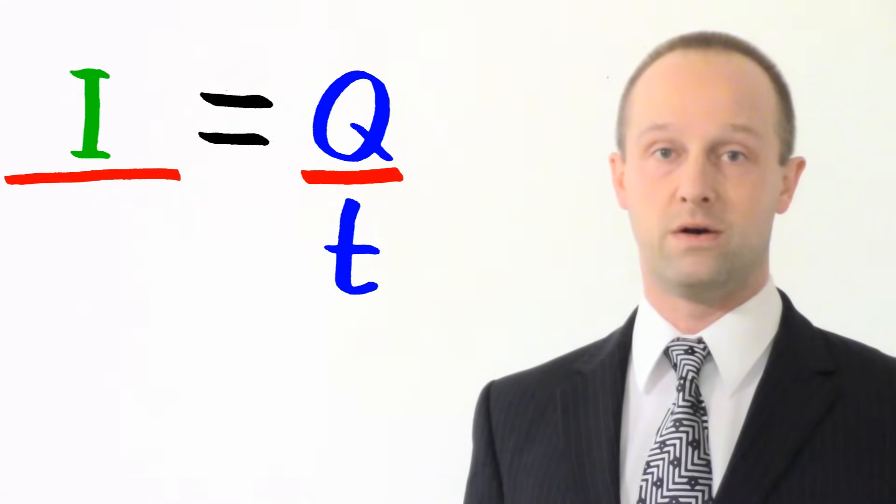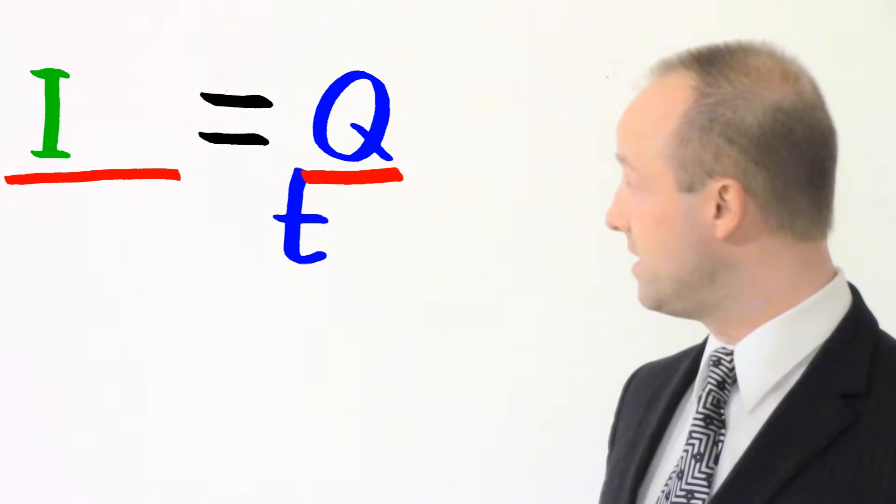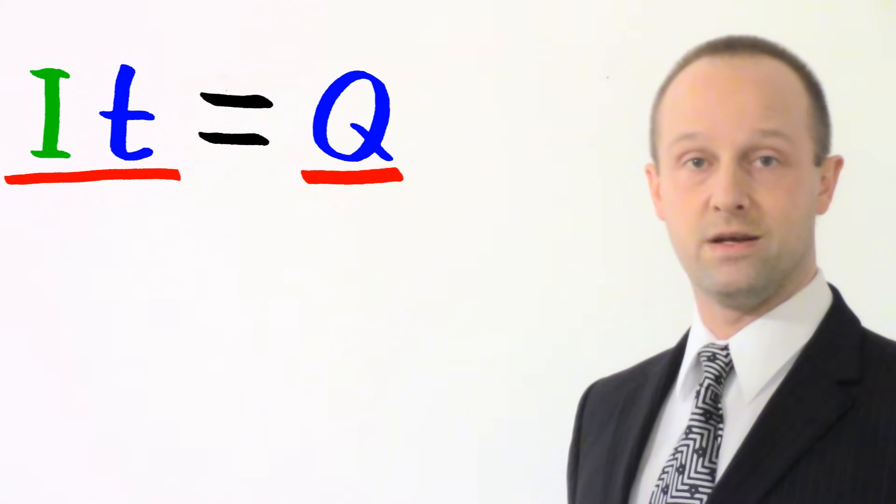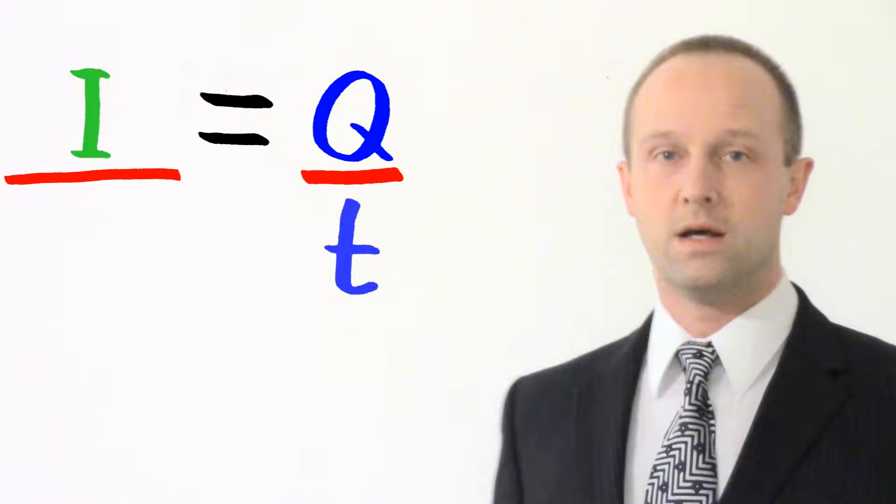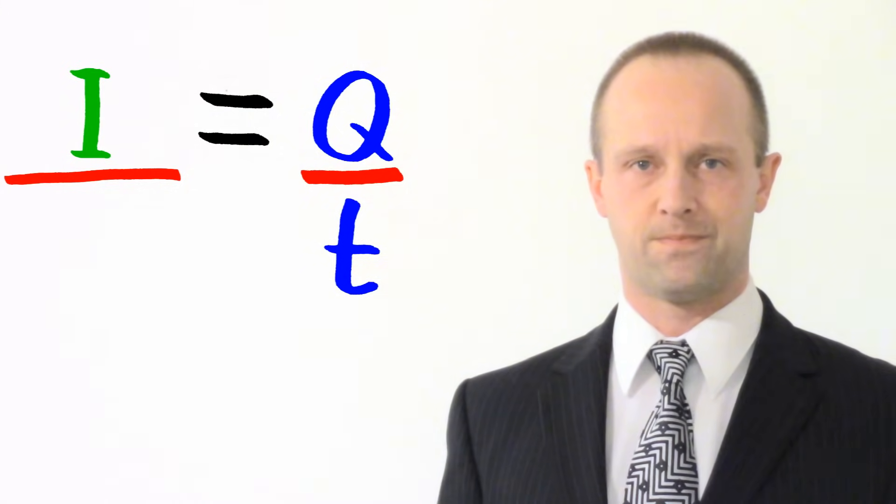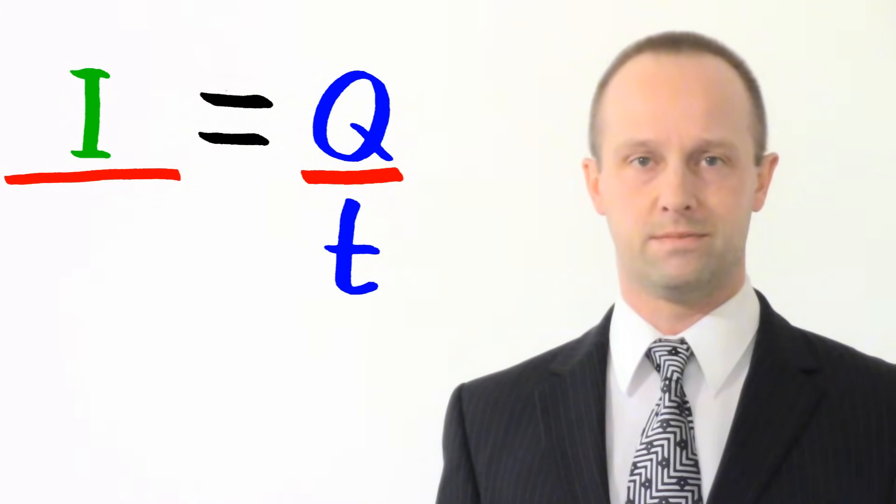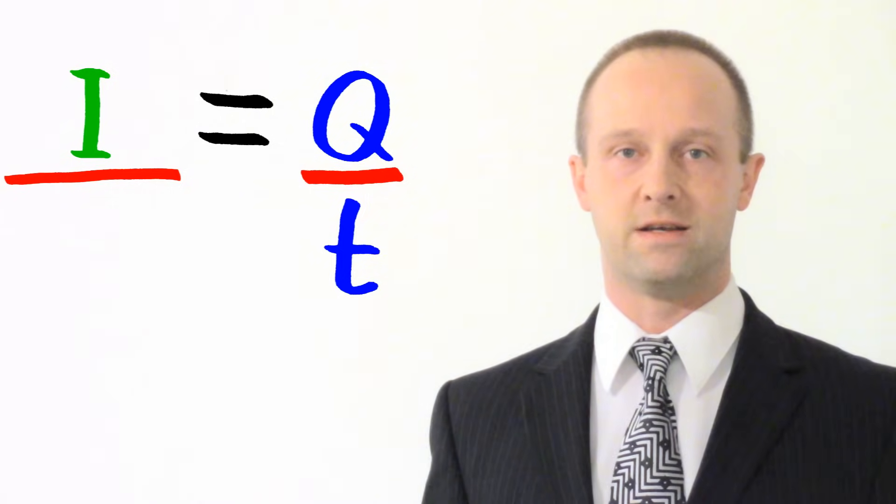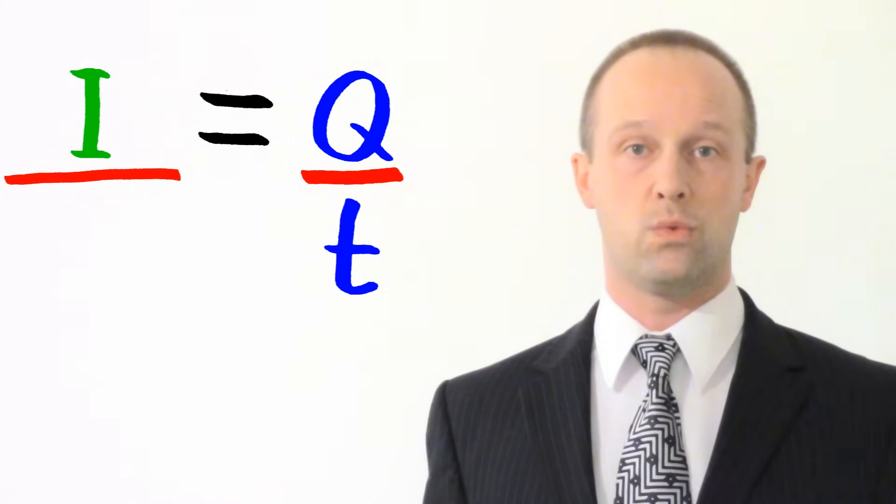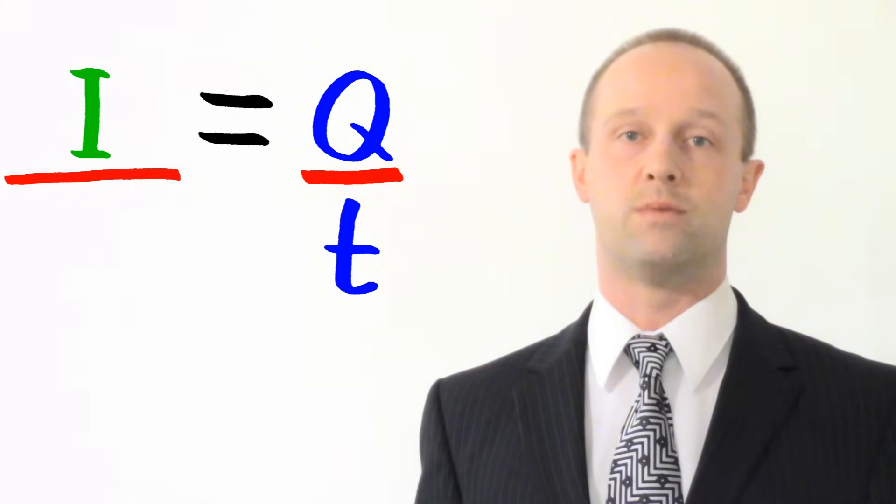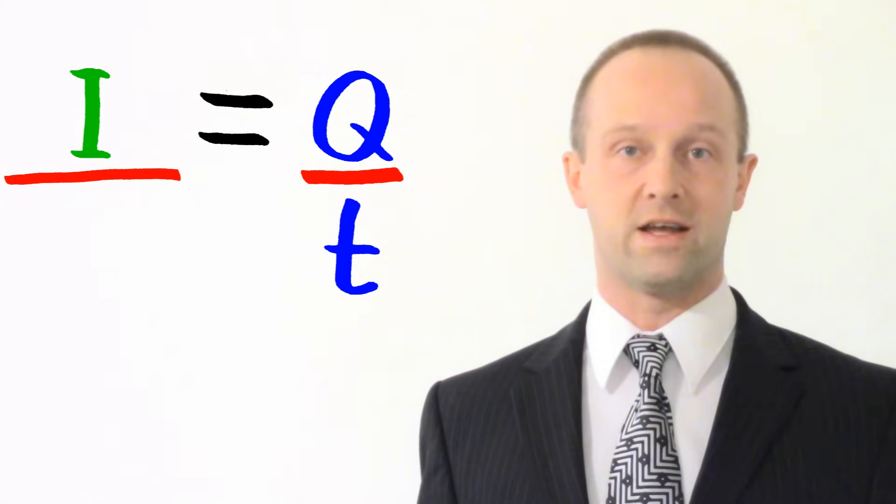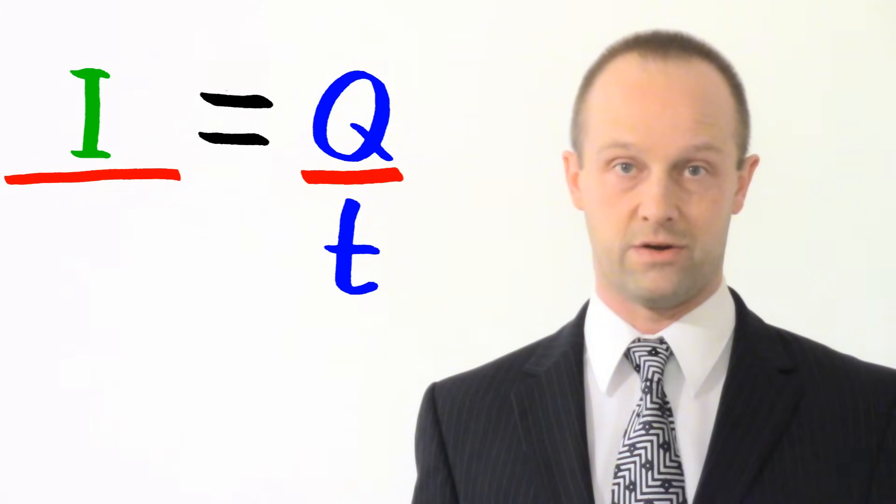Let's have a look at another example. I equals Q over T. Again, if I wanted to find Q, I would just move that T up to the other side of the equation, and I would get IT equals Q. What if we had something a little bit more complex? What if in the same equation, I equals Q over T, we wanted to find out T? We knew what I was, that's how much current is flowing. We knew what Q was, that's how much charge has flown. And we wanted to find out T, how long it took for that charge to flow at a particular current.